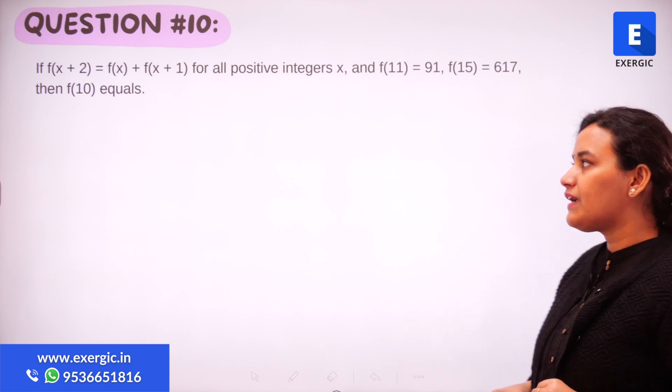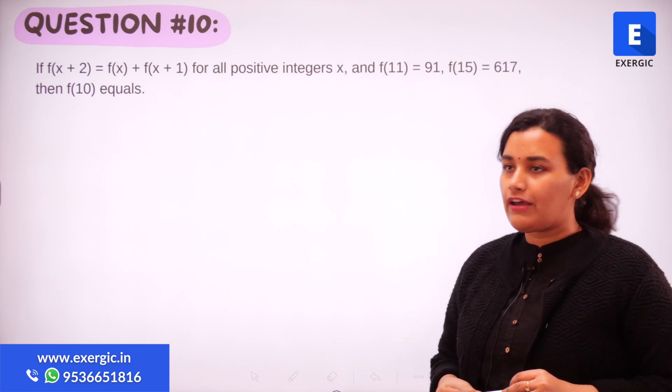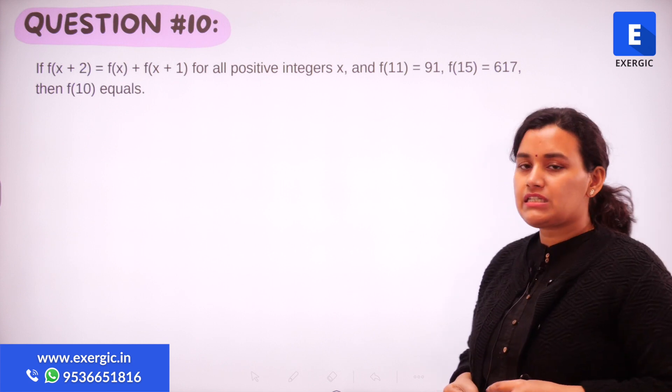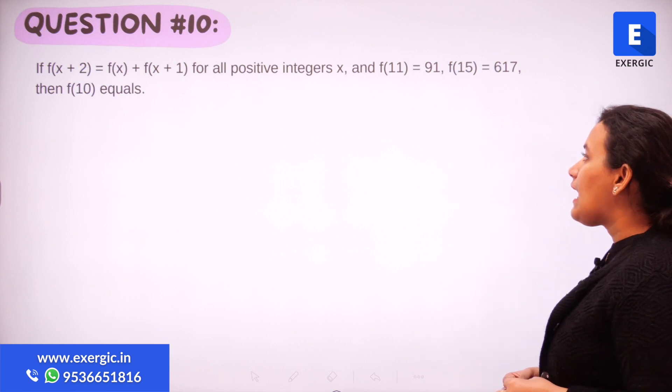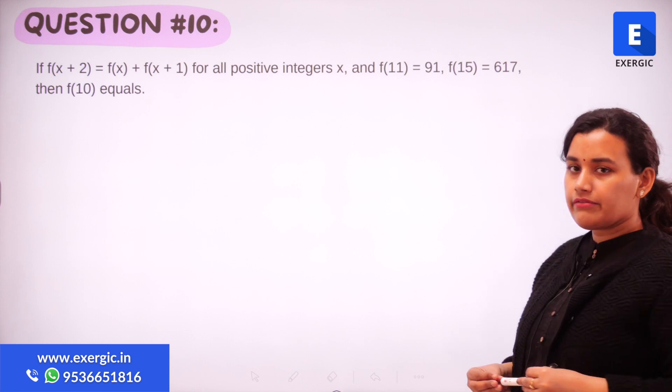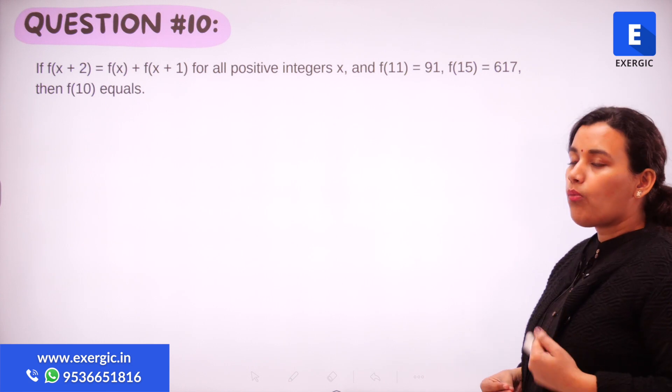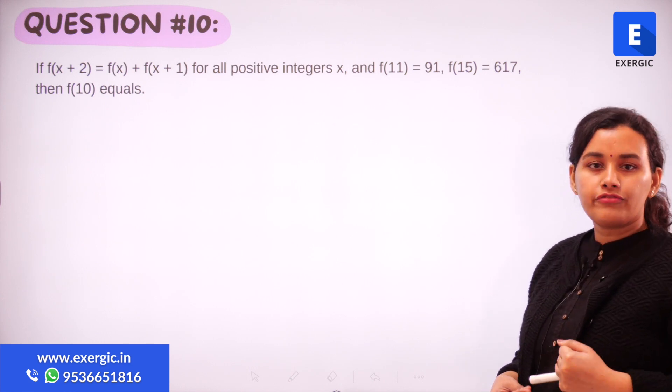It has been given that if f(x+2) is equal to f(x) plus f(x+1) for all positive integers x, and f(11) has been given as 91 and f(15) has been given as 617. What is the value of f(10)?